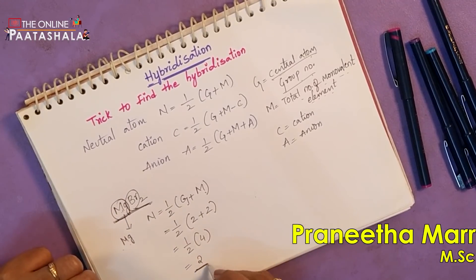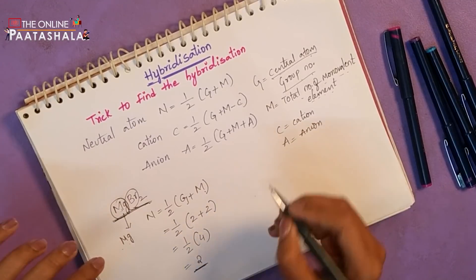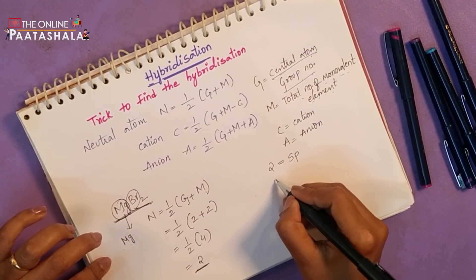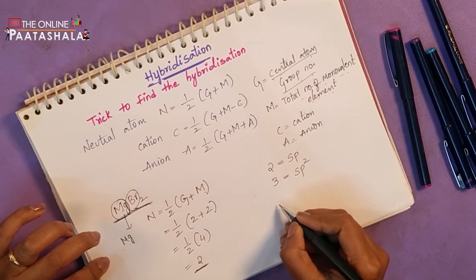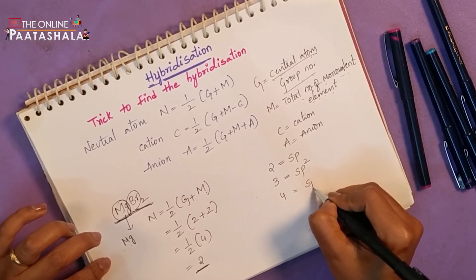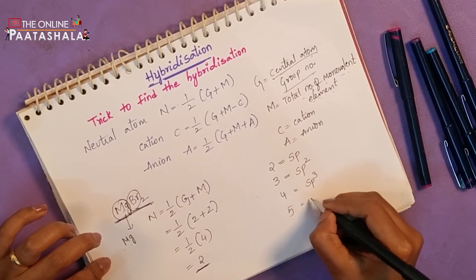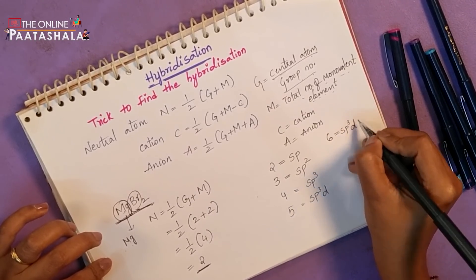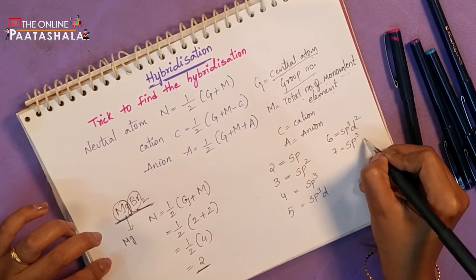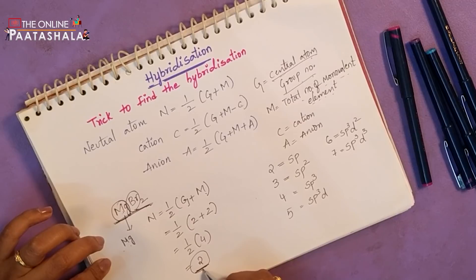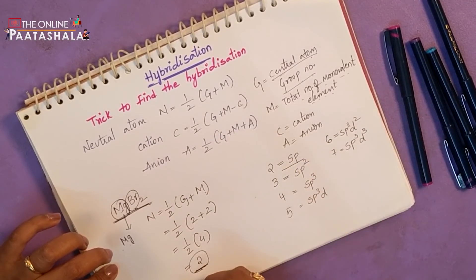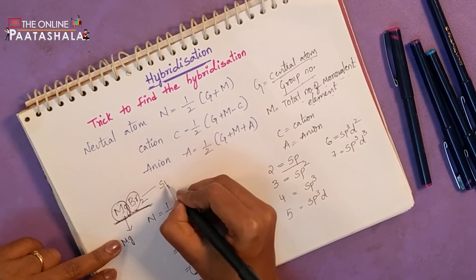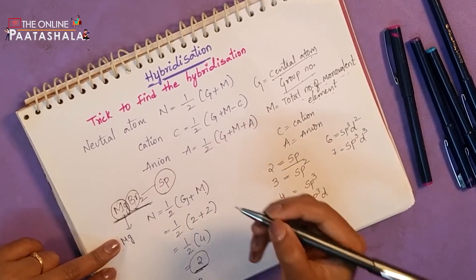How do we tell what the hybridization is? We have a simple lookup: whenever you get answer 2, that is SP hybridization; answer 3, that is SP2; answer 4, that is SP3; answer 5, that is SP3D; answer 6, that is SP3D2; answer 7, that is SP3D3. We got the answer 2, so for magnesium dibromide, the hybridization is SP.